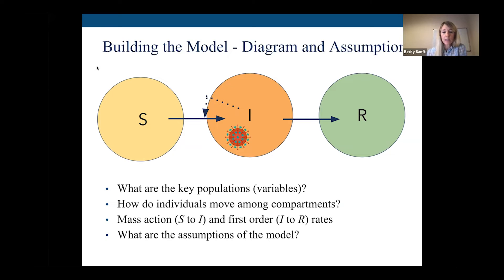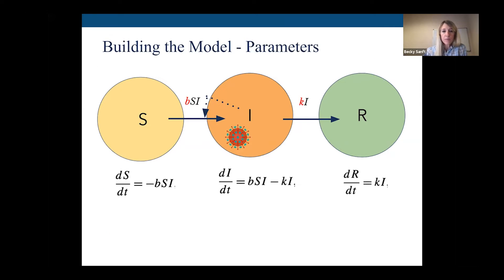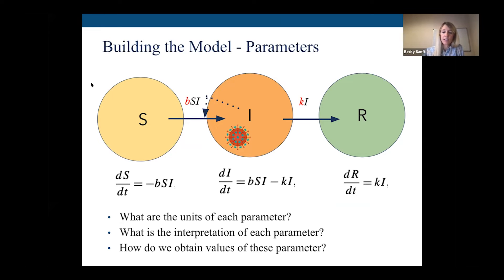We spend a lot of time thinking about the model's assumptions. From there, students are able to write down the equations, which produce some parameters — here we have B and K. Step by step, we think about the units of these parameters and how that helps with interpretation. Then the hard question: how do we obtain values for these parameters? This is where we connect to the data — what data do we need to figure out what these parameters are?